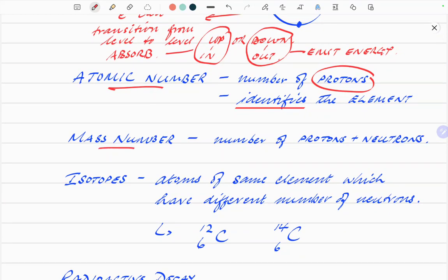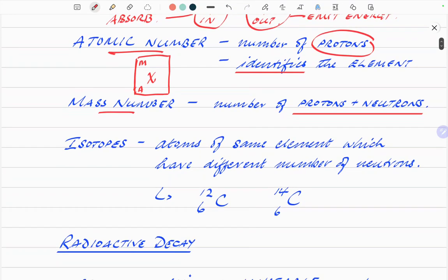The mass number, number of protons plus neutrons. You have your usual box, you've got your element X, and up at the top you've got the mass number, and down in the corner you've got the atomic number. That's how you'll find it in the periodic table.